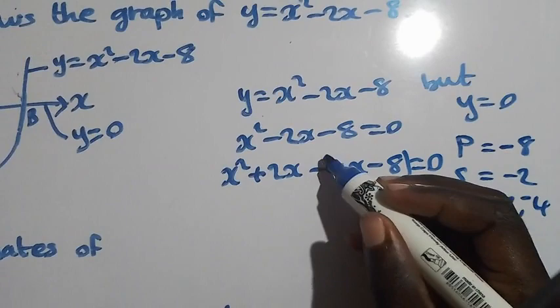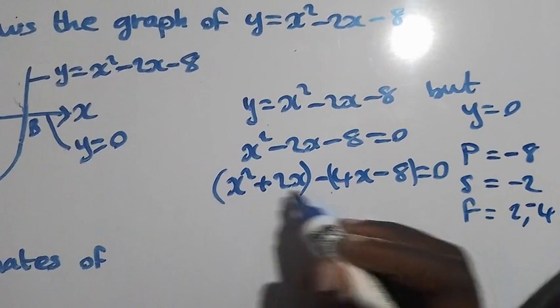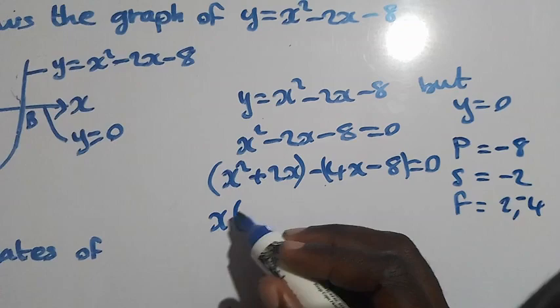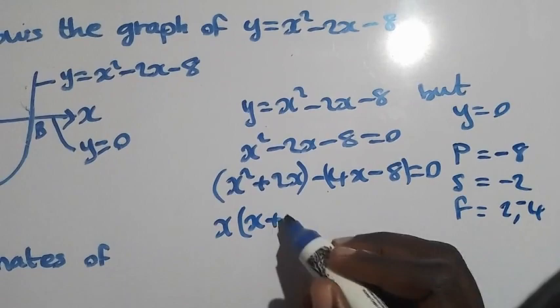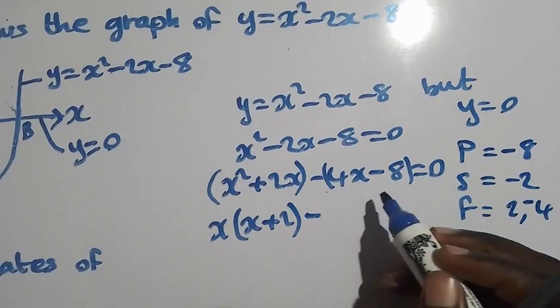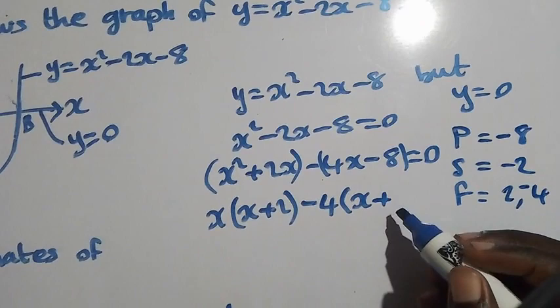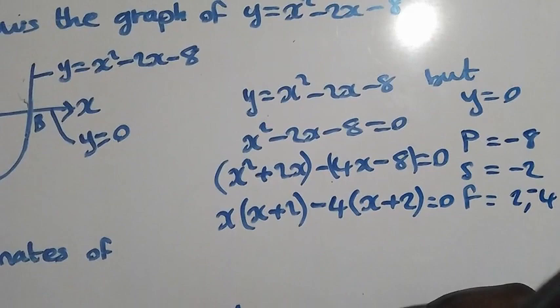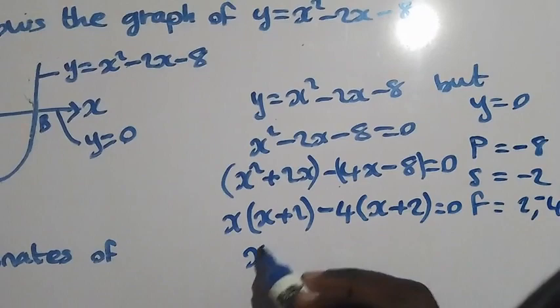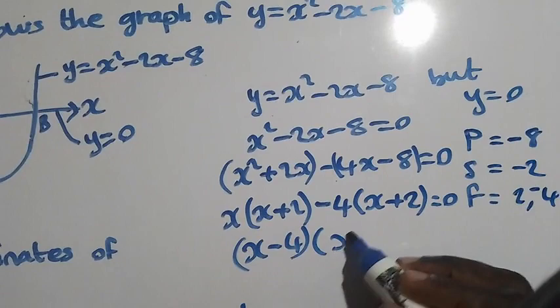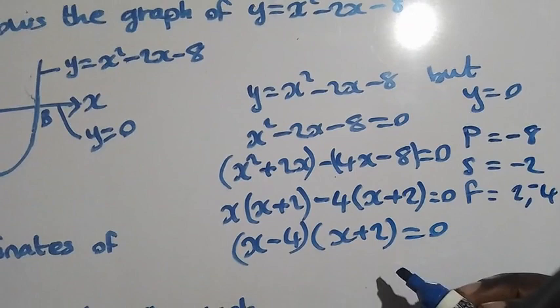Then we group. In the first bracket, we factorize x as common: x times x gives x squared, and x times 2 gives positive 2x. The common factor in the second group is 4: 4 out, and negative 4 into negative 8 gives positive 2. So we get x minus 4, times x plus 2, equal to 0.